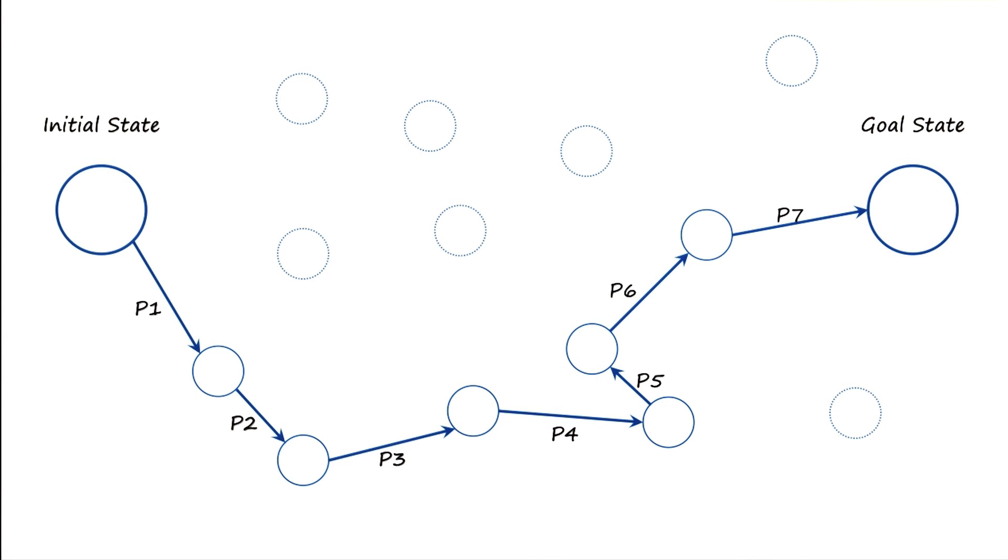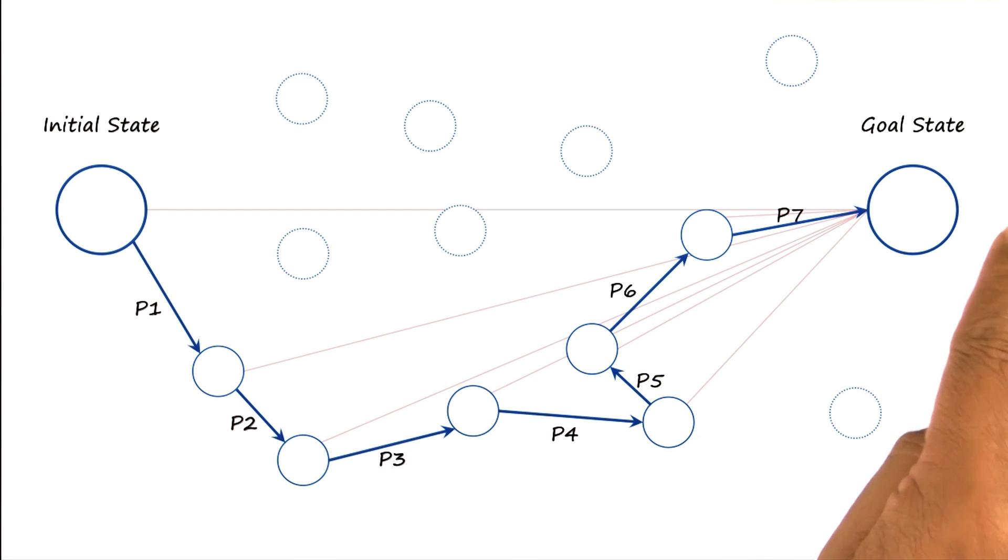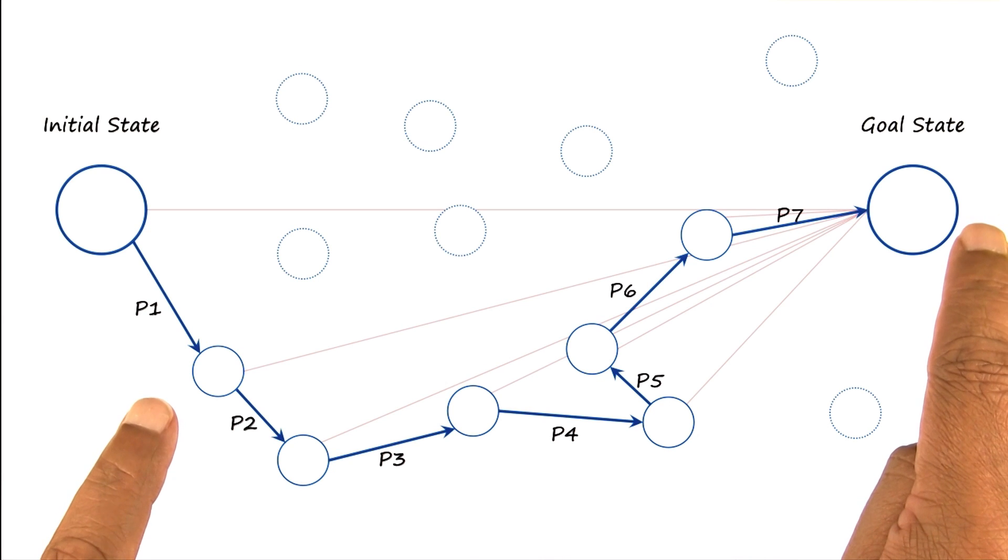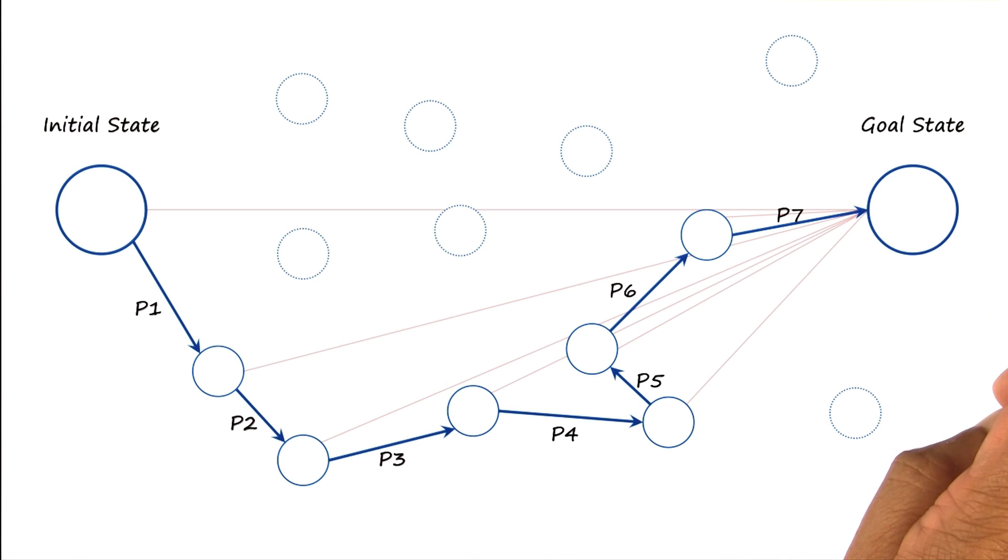One way of thinking about this is to talk in terms of differences. This chart illustrates the differences between different states and the goal state. For example, if the current state was this one, then this red line illustrates the difference from the goal state. We should pick an operator that will help reduce the difference between the current state and the goal state. The reduction of the difference between the current state and the goal state is the end. The application of the operator is the means. That's why it's called means-end analysis.